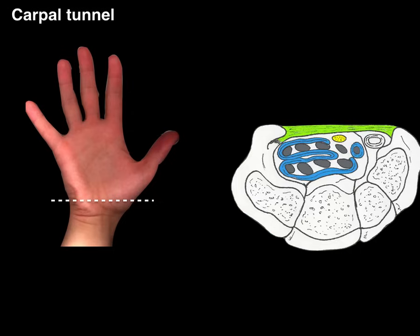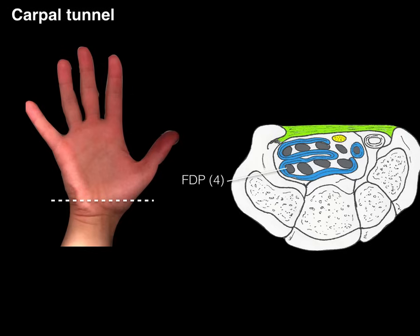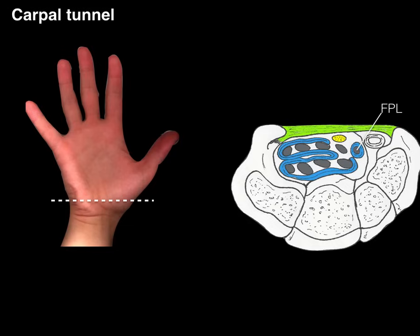Taking a cross-section slightly more distal, we can see the contents of the carpal tunnel. There are four tendons from the flexor digitorum superficialis, going to digits two through five, and four tendons of the flexor digitorum profundus. There is also one tendon of the flexor pollicis longus going to the thumb, giving us nine tendons in total passing through the carpal tunnel.